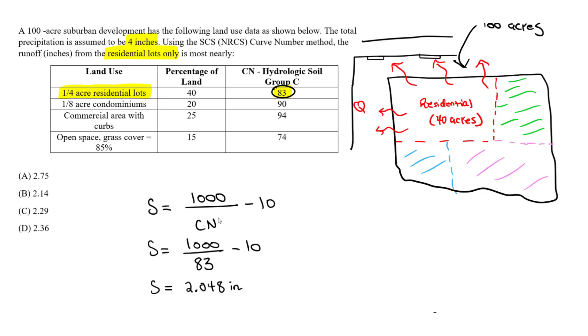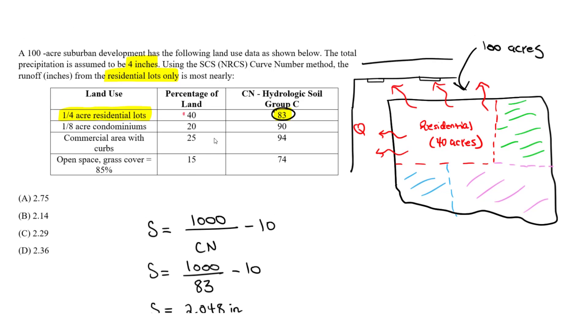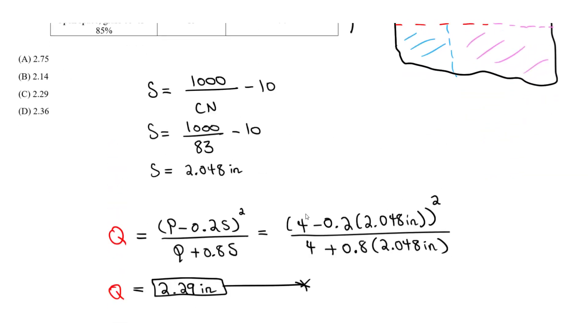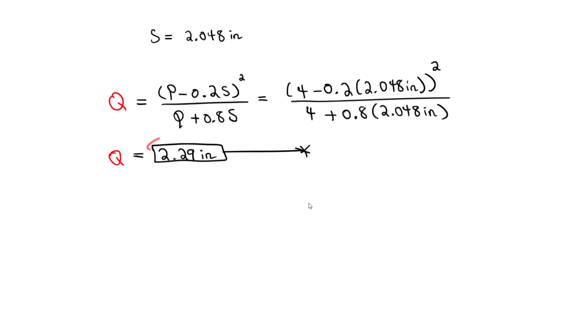And one last thing I want to add to this is we could solve for the volume. So we know we have 40 acres. We know it's 40 acres because 40% of 100 of the total acreage, we have 40 acres for the residential. So we can simply take the 40 acres times this value, and we can arrive at a volume. But we have to be careful with the units here. So essentially the total discharge, we are going to take our 40 acres times the 2.29 inches.